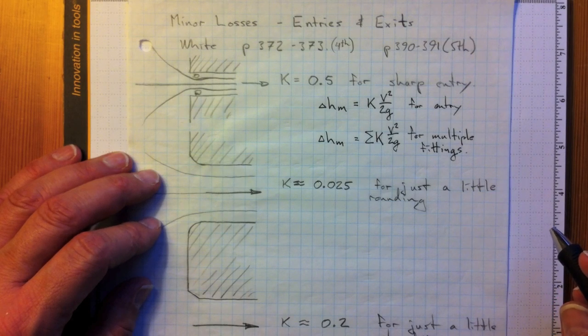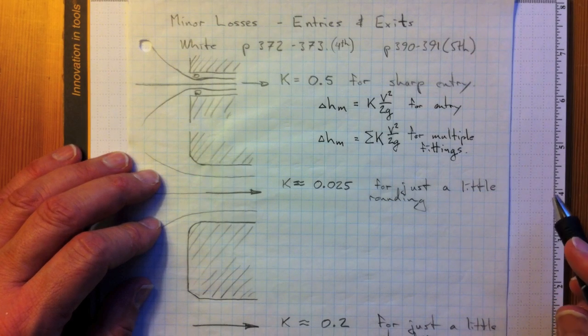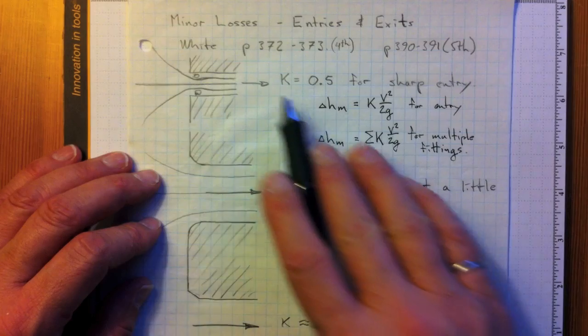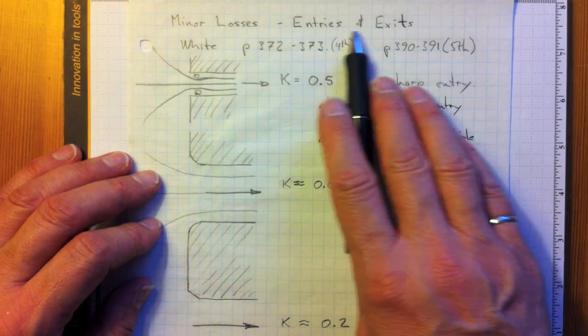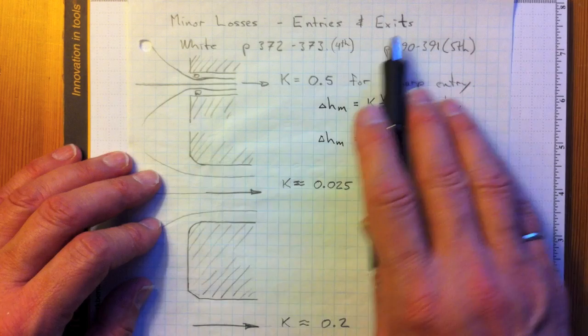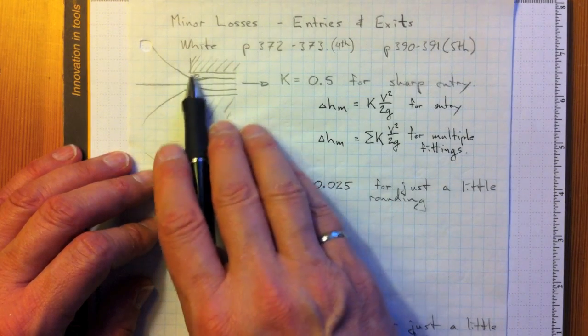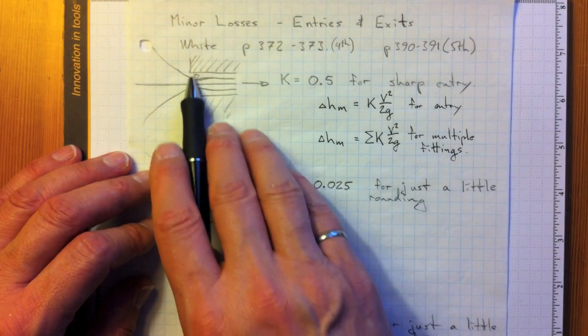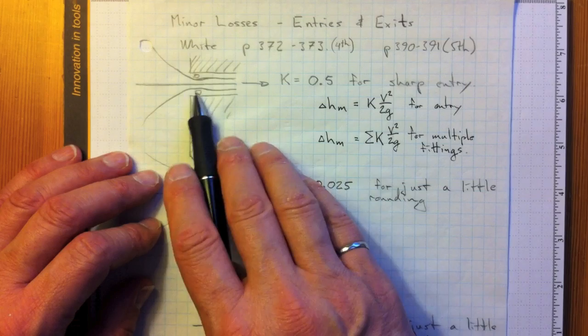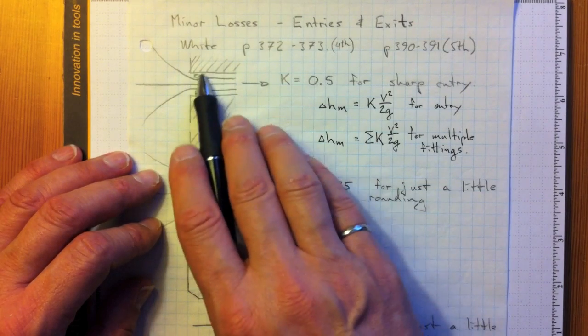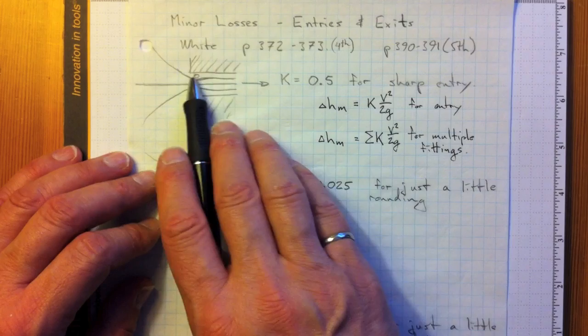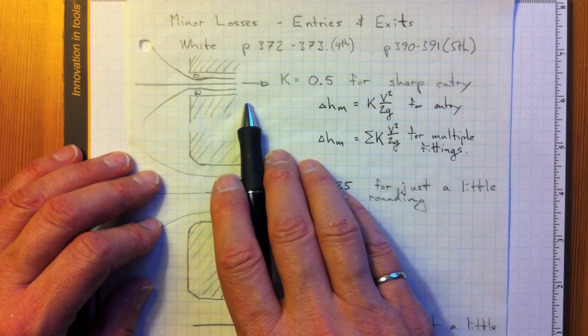In addition to friction losses from the wall shear stress on the pipe, we also have what are commonly referred to as minor losses for things like entries, exits, and fittings. They occur because of secondary flows that develop, like these recirculation zones that happen just inside a pipe entry that take energy out of the flow and don't put it back into pressure recovery further downstream.